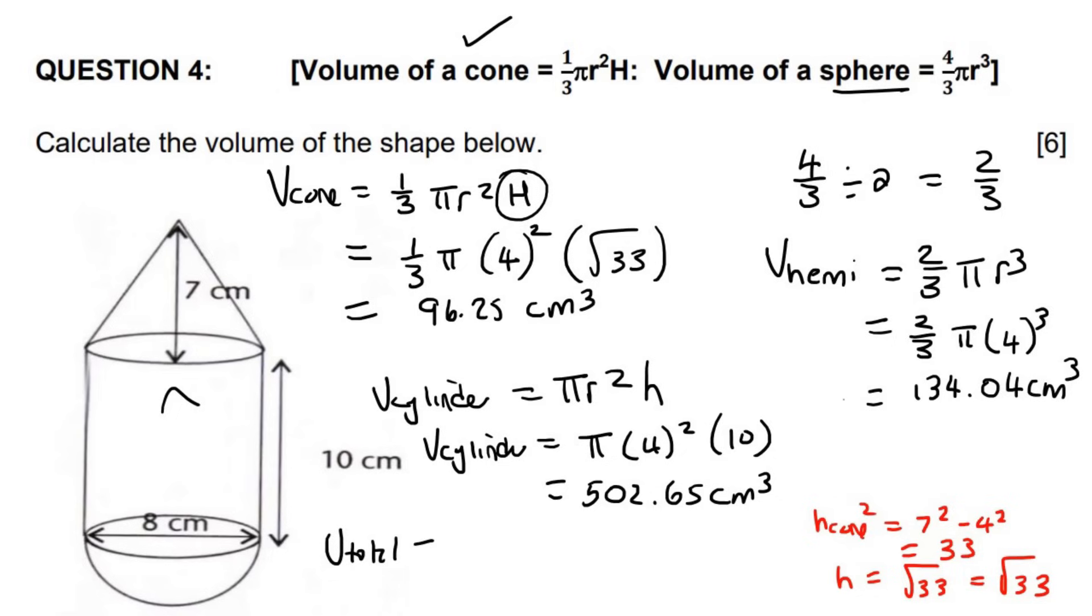So the total volume is then just going to be 96.25 plus 134.04 plus 502.65. And that'll be, that'll be... I sound like Shrek from Shrek. Oh yeah, I sound like Shrek from Shrek. It makes sense. That'll do, donkey. That'll do.